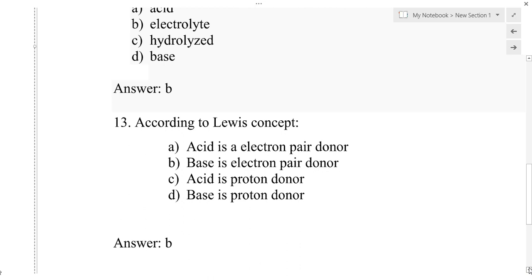There are different types of acid-base concepts: the Arrhenius concept, the Brønsted-Lowry concept, and the Lewis concept. According to the Lewis concept, an acid is an electron pair acceptor and a base is an electron pair donor. Therefore, option B is the correct answer.